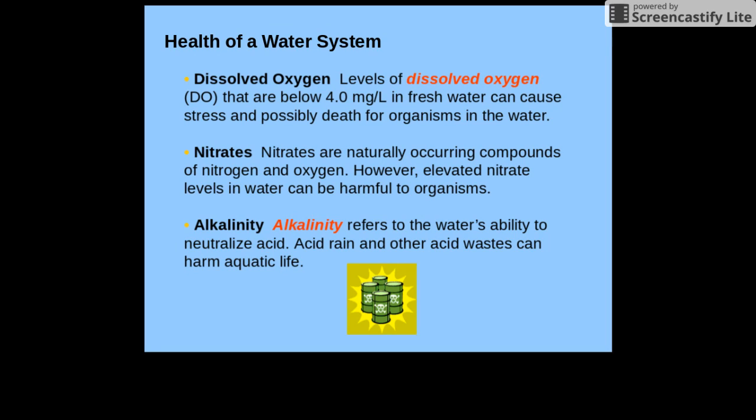Acid rain and other acid wastes can harm aquatic life. If there isn't the right balance between alkalinity and acid rain, you're going to end up with water that's too acidic for different animals.